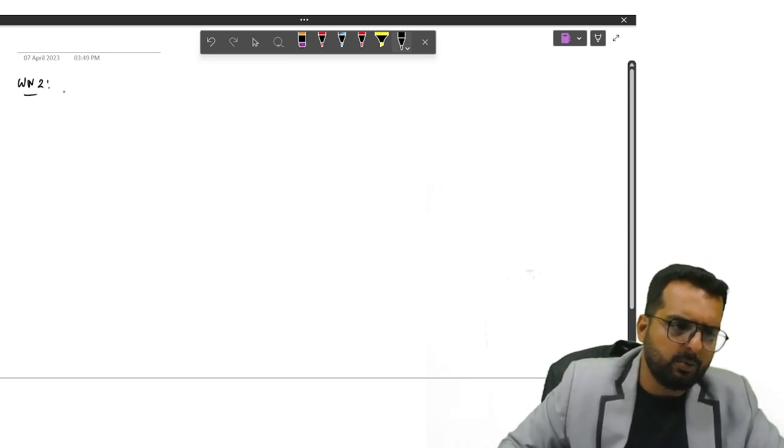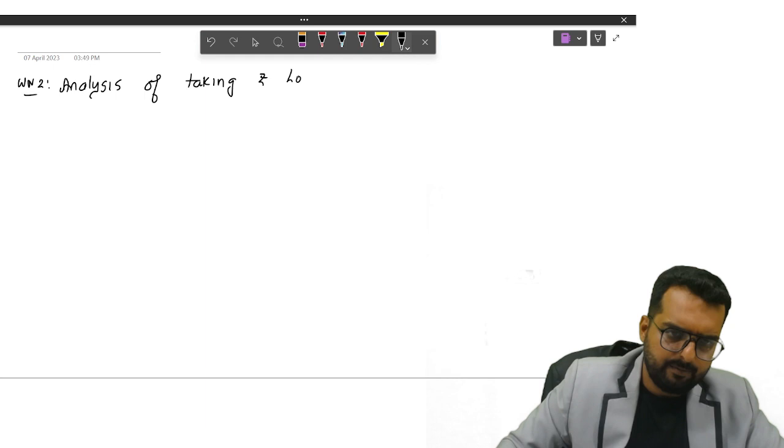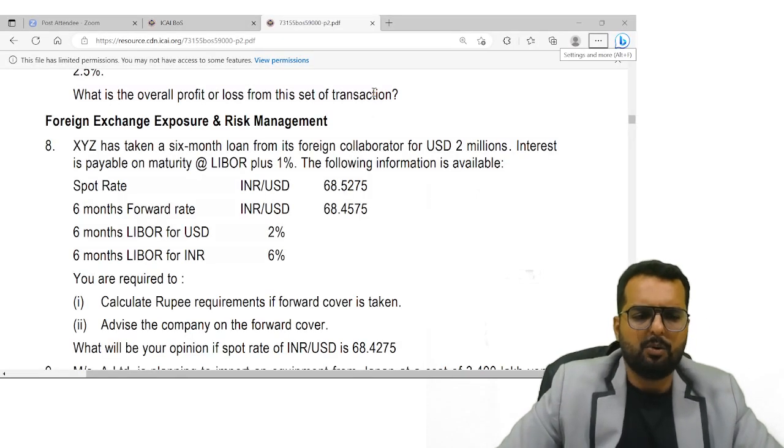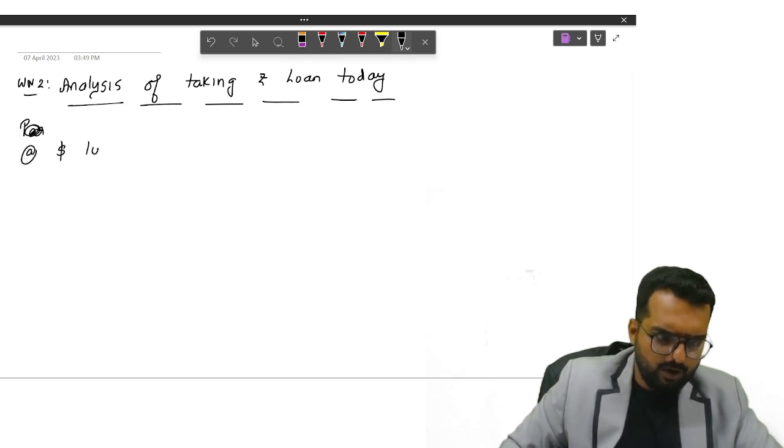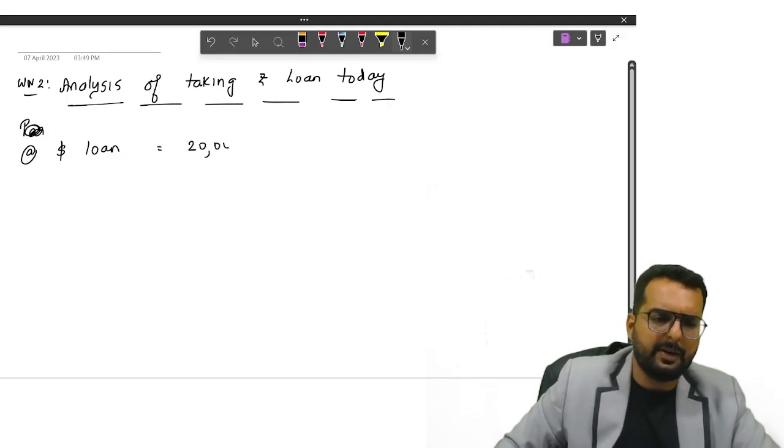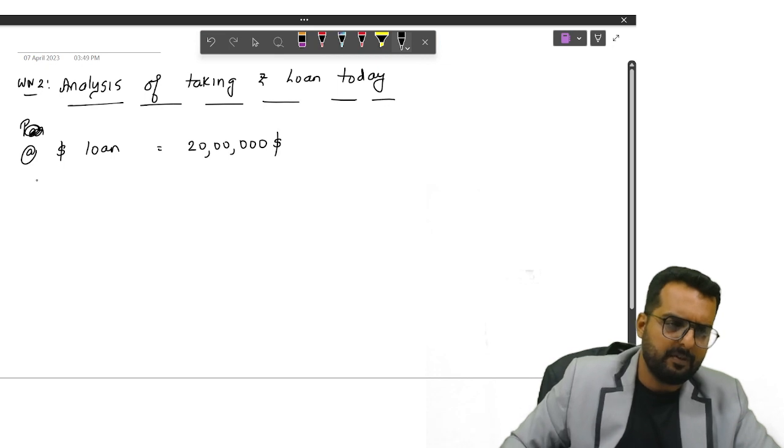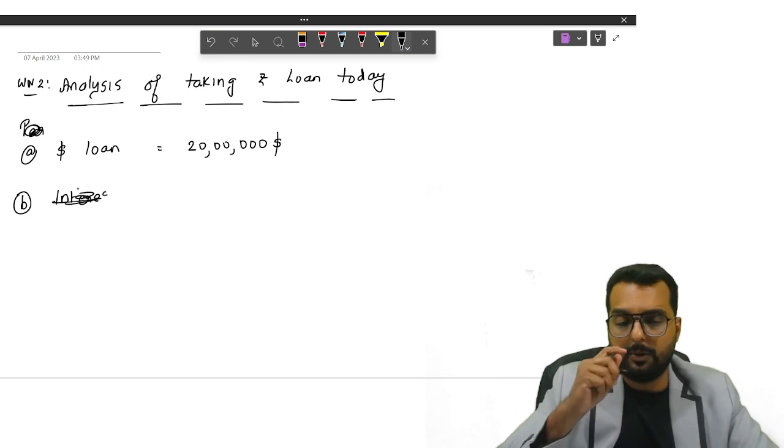Now I'll write down working note number two. Analysis of taking rupee loan today. So here what I will do is I'll draw a table. Point number A. Dollar loan. How much is the dollar loan they have? Two million. So can I say it is 20 lakh dollar? Am I right? Now on this I will be converting it today.